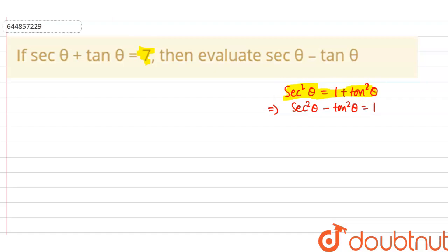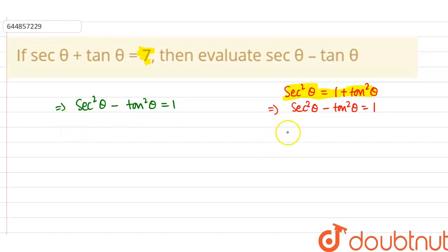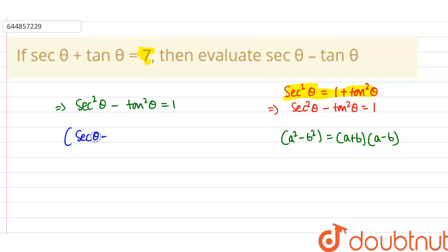We need to find the value of secant theta minus tan theta. We know that secant squared theta minus tan squared theta equals 1. This is in the form of a squared minus b squared, which factors as (a plus b)(a minus b). So we rewrite it as (secant theta plus tan theta)(secant theta minus tan theta) equals 1.